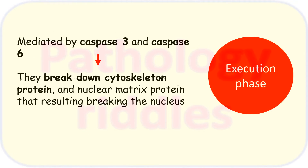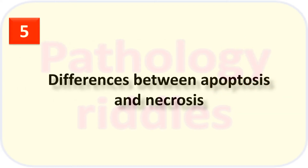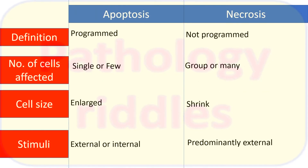The execution phase is mediated by caspase 3 and caspase 6. They break down cytoskeletal proteins and nuclear matrix proteins, resulting in breaking of the nucleus. Now what is the difference between apoptosis and necrosis? Apoptosis is programmed or timed cell death, whereas necrosis is not programmed.